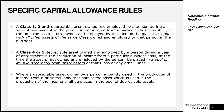Where a depreciable asset is partly used in the production of income from a business, only that part used shall be placed in the pool. For example, if you use a motor vehicle 80% of the time for business and 20% for personal use, only 80% of the cost is added to the class two pool for capital allowance purposes. The 20% personal-use portion grants no capital allowance. Assets partly used for private purposes must have their costs apportioned before capital allowance is granted.